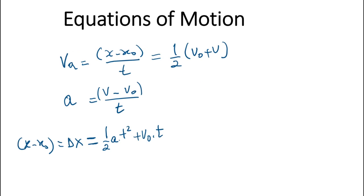Welcome to physics class. In the previous video on motion in one dimension, we talked about average velocity and average acceleration. The average velocity is the displacement over time, or the average of all the velocities — meaning if you add all the velocities and divide by the number of data points. With initial velocity and velocity at any time, you add them and divide by two.